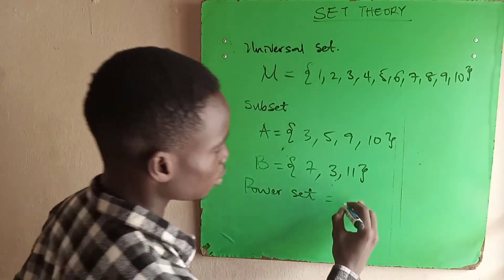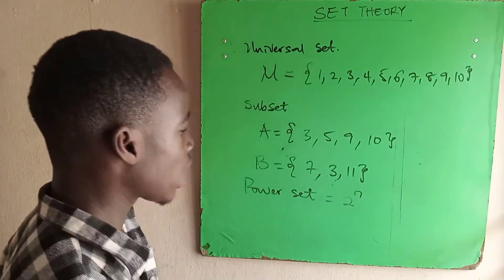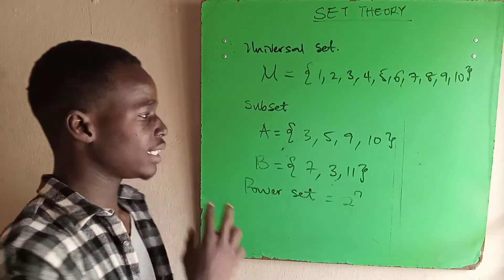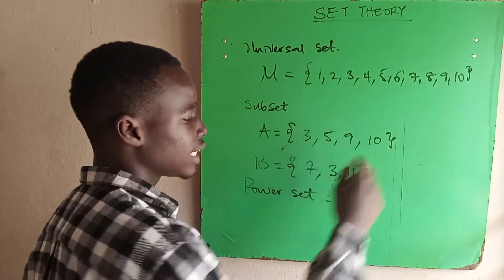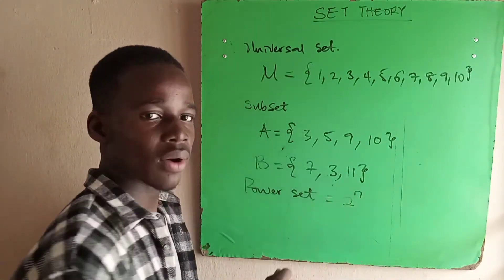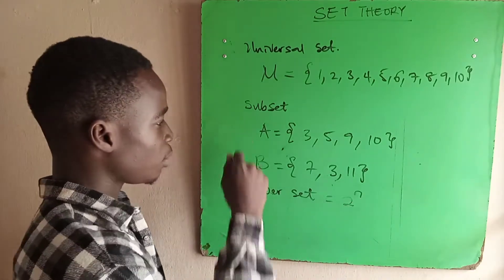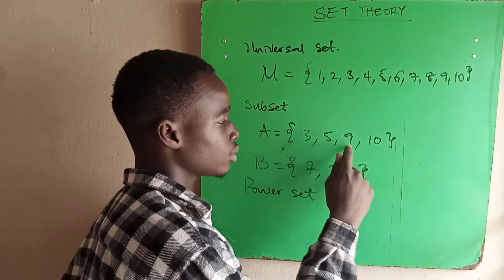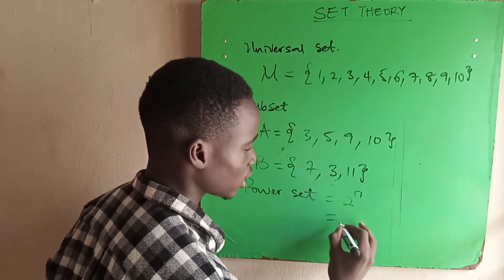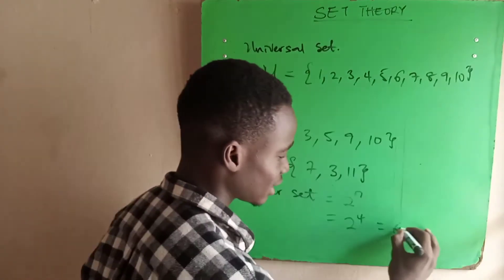We move on to power set. Power set has the formula 2 raised to power of N. If we say find the power set of A, we look at all the elements in set A, that will be our N. The number of elements in the set is our N. We count all the elements in set A: 1, 2, 3, 4. And then the power set becomes 2 raised to power of 4, which is 64.